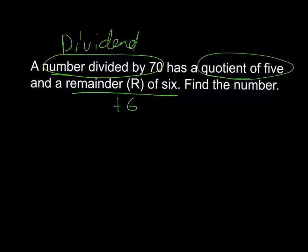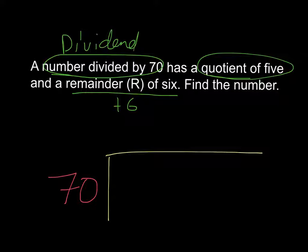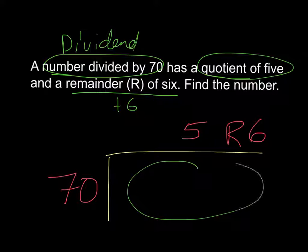Then what I'm going to do is draw my division table. A number divided by 70. I don't know what goes here, but I do know that it's going to be divided by 70. My quotient is going to be 5. And the remainder is 6. Think about what you can do here to determine what number is here.